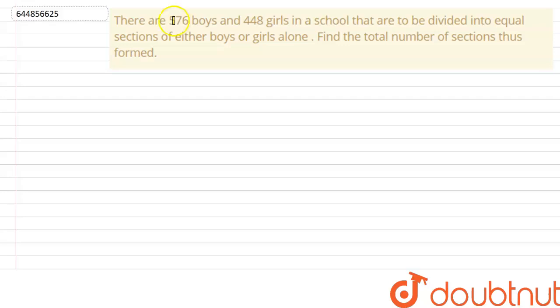Today we have a question: there are 576 boys and 448 girls in a school that are to be divided into equal sections of either boys or girls alone. We have to divide the 576 boys and 448 girls into equal sections — each section should have an equal number of students and contain either only boys or only girls.